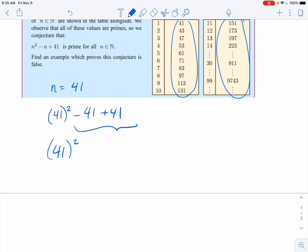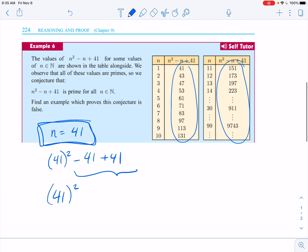So the value of n equals 41 is a counterexample, which would then prove that conjecture false. So that's what we are looking for when we want a counterexample. We're just trying to find one situation that makes our conjecture invalid.